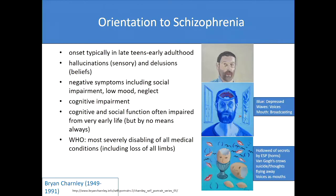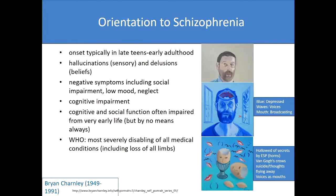Schizophrenia is what's classically called one of the major psychotic disorders in psychiatry. Typically it starts in an obvious manifestation in people in their late teens or early adulthood. The most dramatic symptoms are hallucinations - sensory perceptions in the absence of there actually being anything to perceive - and delusions, which are false beliefs. I'll give you some examples of those with reference to the pictures on the side in a moment.